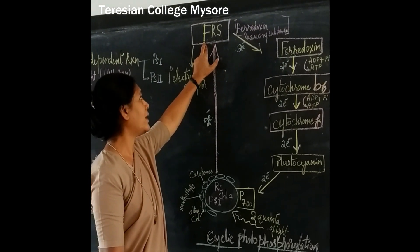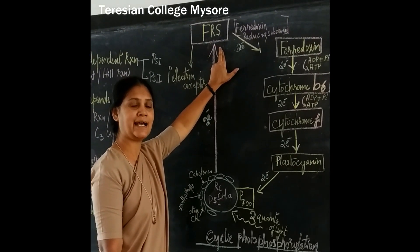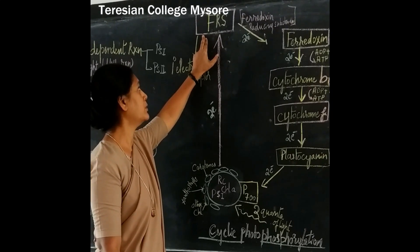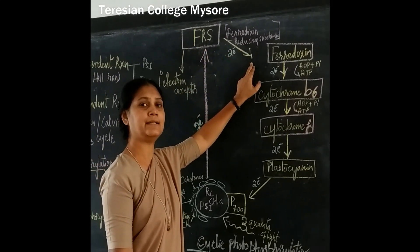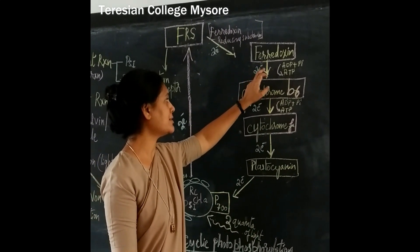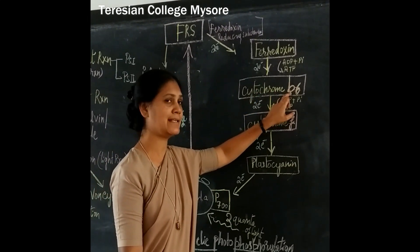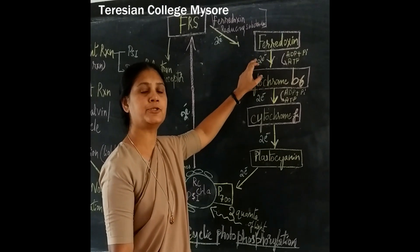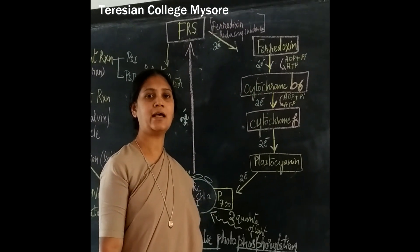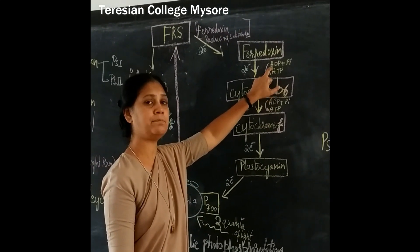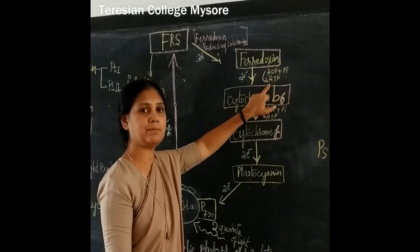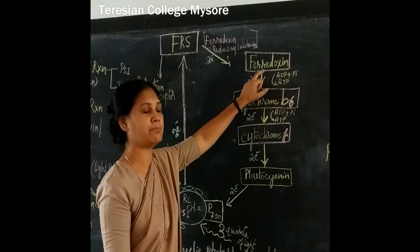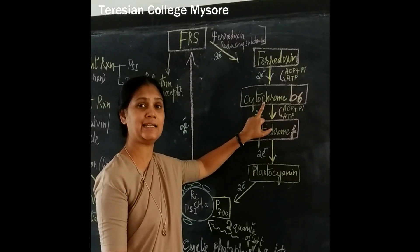Hence the name FRS. When the electrons receive the two electrons, they get excited and want to pass the two electrons to the next level in order to get back to a stable foundation. When two electrons are liberated to ferredoxin, the ferredoxin gets excited and passes the two electrons to the next stage called cytochrome B6. During the process of passing the two electrons, there is energy loss, and ATP utilizing inorganic phosphate is produced. Hence, a molecule of ATP is produced during two electrons passing from ferredoxin to cytochrome B6.